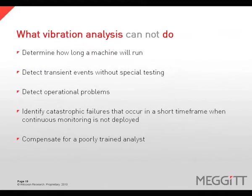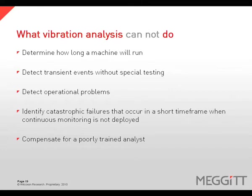Vibration analysis also has some limitations. For example, it cannot tell you explicitly how long a piece of equipment will run, but it can provide valuable information indicating if a problem is getting more severe. Vibration analysis also cannot effectively detect operational problems, transient events without special testing, or catastrophic defects that fail very rapidly if continuous data is not collected. Likewise, vibration analysis can be unsuccessful if the user is not properly trained to collect the appropriate data and interpret the results correctly.